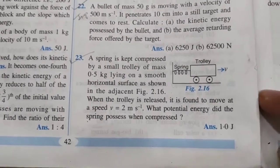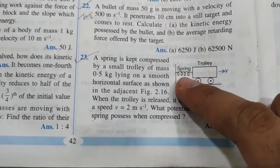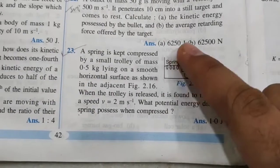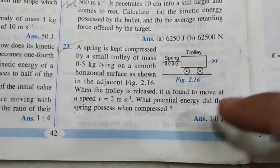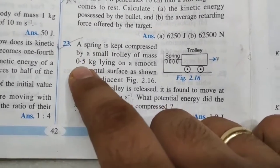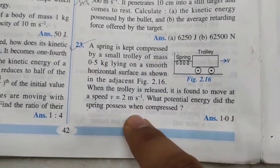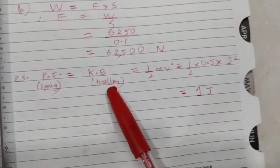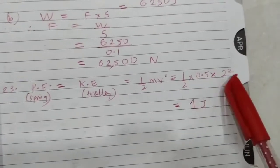In the 23rd sum, a spring was kept compressed by a trolley. When released, the elastic potential energy of the spring was transferred to the trolley as kinetic energy, causing the trolley to move at 2 meters per second with a mass of 0.5 kg. The potential energy of the spring equals the kinetic energy of the trolley — half mv squared — giving the answer as 1 joule.